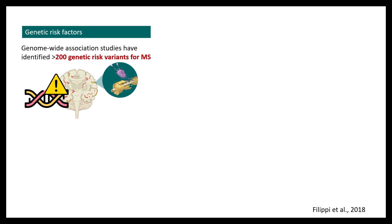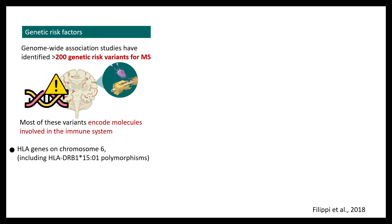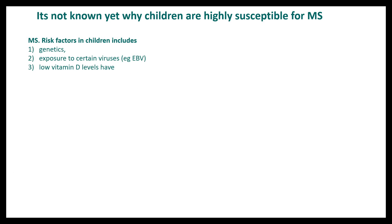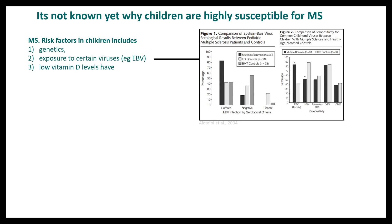Regarding genetic factors, more than 200 risk gene variants are associated with MS. Most encode molecules involved in the immune system or immune modulation, including HLA genes on chromosome 6, especially HLA-DRB1, where polymorphisms are associated with MS. Polymorphisms in IL-2 and IL-7 receptors are also associated with MS. Additionally, viral infections — notably Epstein-Barr virus — are highly associated with MS according to recent studies.